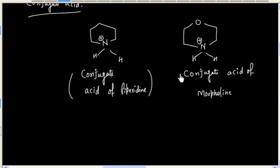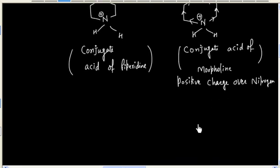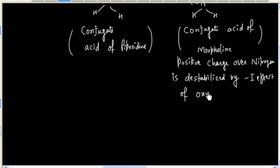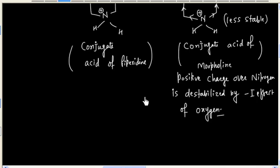This is the conjugate acid of morpholine. In the case of morpholine, due to the minus-I effect of oxygen, the positive charge on nitrogen is destabilized. The corresponding conjugate acid is less stable, so morpholine is less basic compared to piperidine.